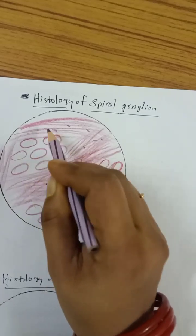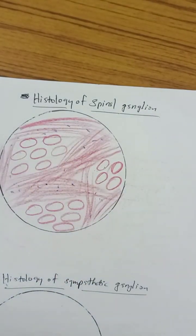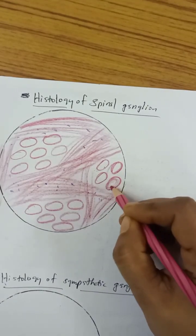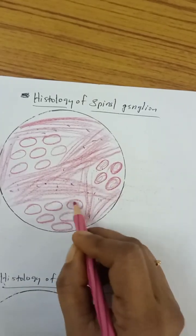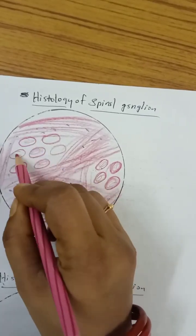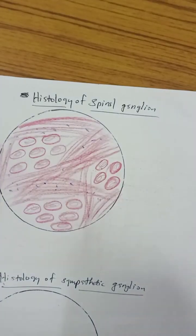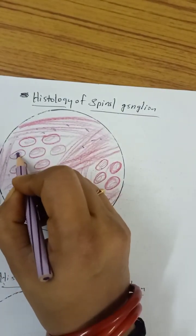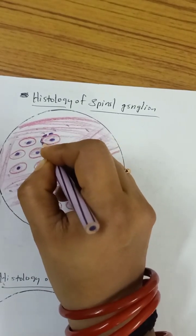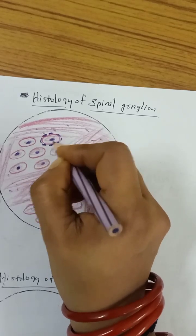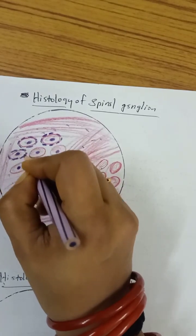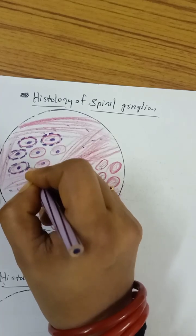The pseudo-unipolar ganglionic cells have cytoplasm that takes eosin stain, and a centrally placed nucleus. Satellite cells are arranged outside the cell membrane, attached next to it. A large number of satellite cells are present in the spinal ganglion.